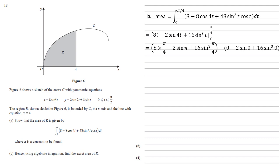Simplifying: 8 times pi over 4 is 2 pi. Sine pi is 0. Plus 16 lots of root 2 over 2 cubed, since sine pi over 4 is root 2 over 2. All three terms in the second bracket are 0 because sine 0 is 0. We end up with a final answer of 2 pi plus 4 root 2. That's the exact area of R.